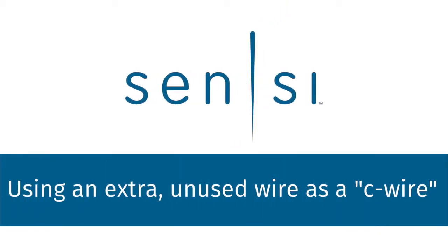If you're installing a new Sensi thermostat and need a common wire or C wire to complete your installation, the first option we'll walk through is how to look for an extra unused wire to use as a C wire.